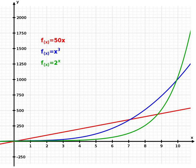In economics, economic growth is expressed in percentage terms, implying exponential growth. In finance, compound interest at a constant interest rate provides exponential growth of the capital. See also Rule of 72. Pyramid schemes or Ponzi schemes also show this type of growth resulting in high profits for a few initial investors and losses among great numbers of investors.